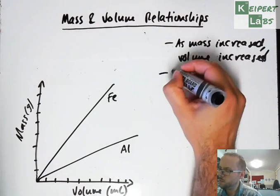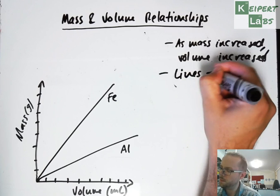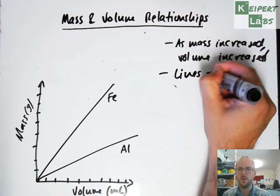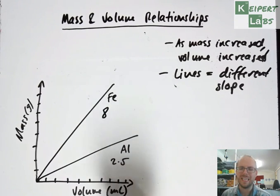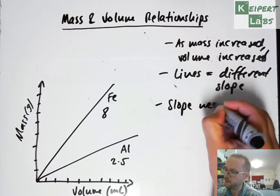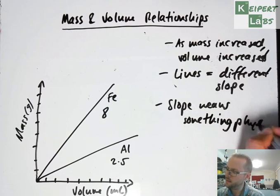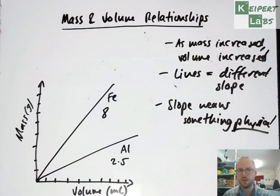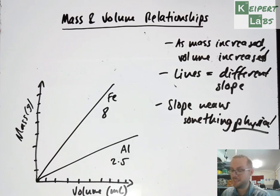But what we saw is the lines had different slopes or gradients. So that is, if you calculated the slope of your lines, we saw that aluminum would have been somewhere around about 2.5, and when you calculate it for iron it's somewhere around about 8, so distinctly different. What we're seeing there is that the slope of this line means something. It means something physical. That is, it's not just a mathematical construct. It actually represents a relationship between the mass and volume of different substances, of that particular substance.